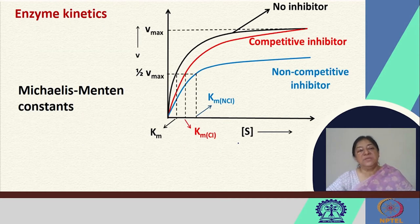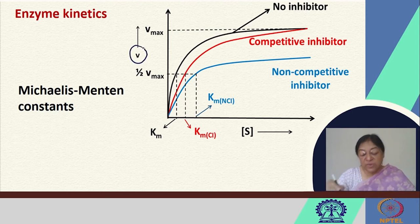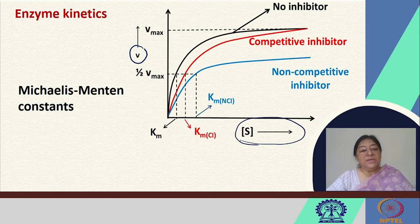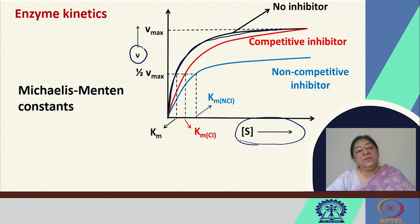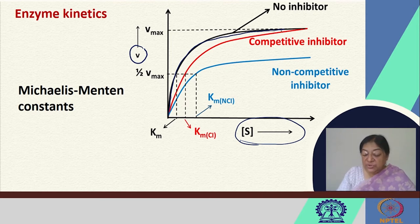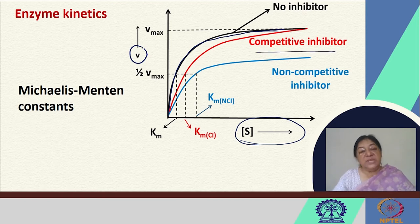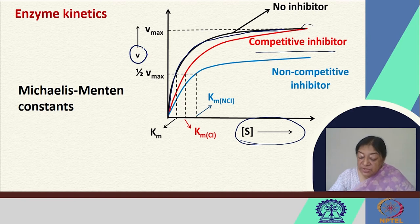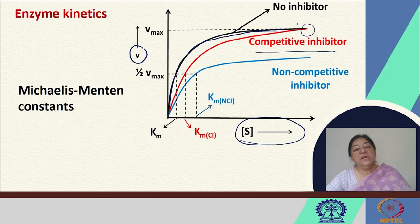Let us look at the Michaelis-Menten enzyme kinetics — the typical velocity curves obtained in enzyme kinetics, where we plot the velocity of the reaction versus substrate concentration. When there is no inhibitor, we have a curve showing first-order behavior followed by zero-order, indicating that an increase in substrate concentration does not affect the rate because the enzyme active sites have been saturated. When we have a competitive inhibitor, it reaches the same Vmax because the enzyme-inhibitor complex is a reversible formation and, with sufficient substrate concentration, the same Vmax can be reached.